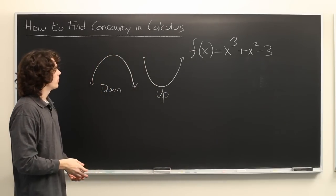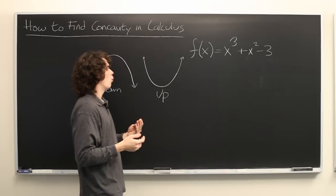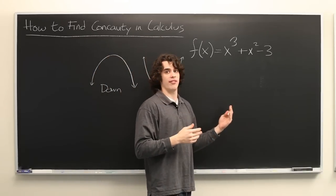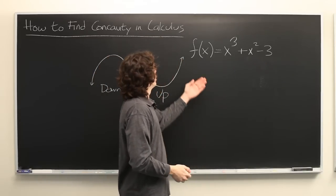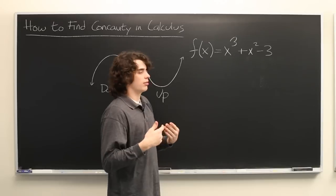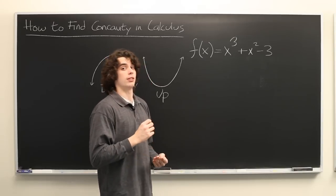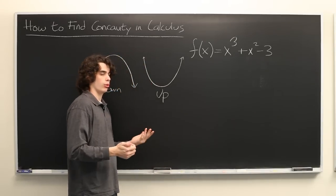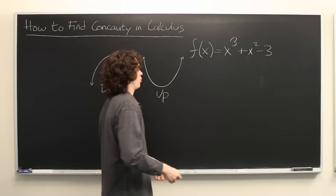How do we find where a function is concave up or concave down? Well, the concavity of a function is dependent on the sign of the second derivative. So in order to do that, we need to first find the first derivative.